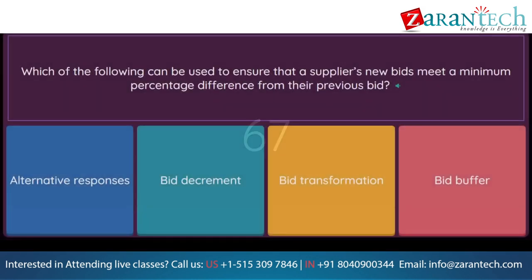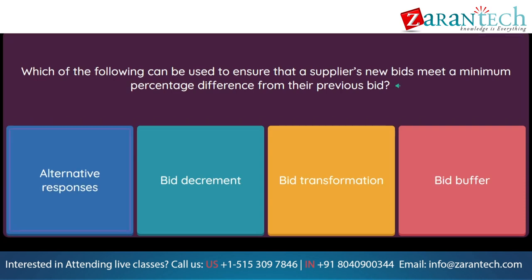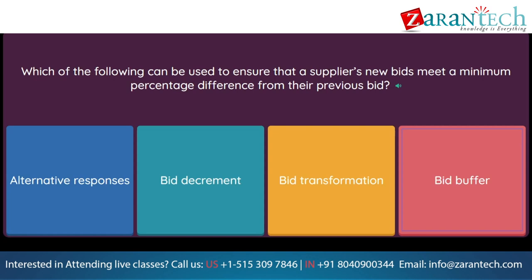Question: Which of the following can be used to ensure that a supplier's new bids meet a minimum percentage difference from their previous bid? Option 1: alternative responses. Option 2: bid decrement. Option 3: bid transformation. Option 4: bid buffer.